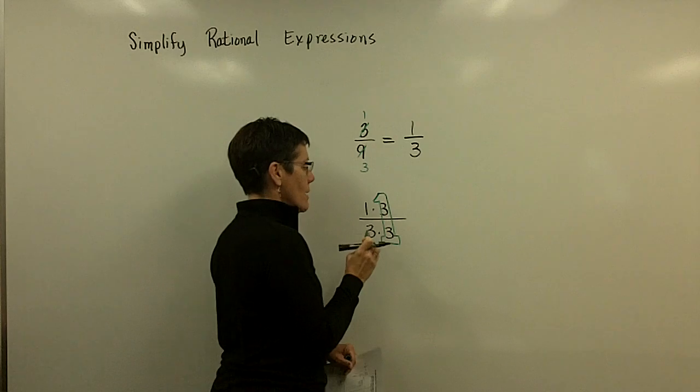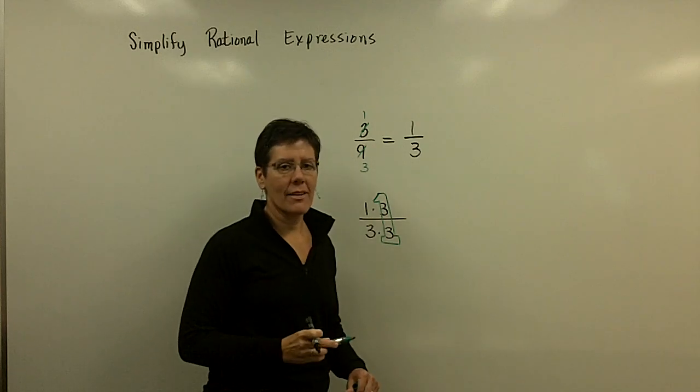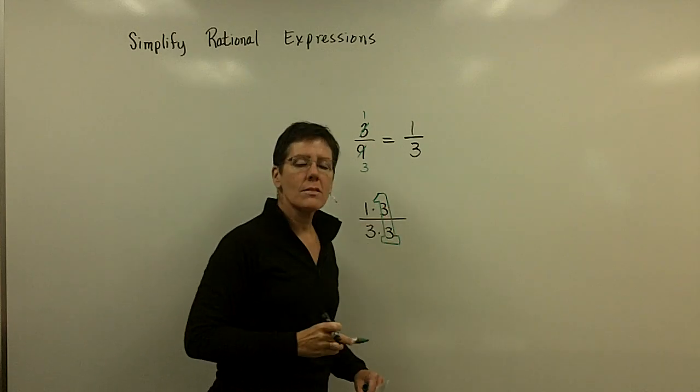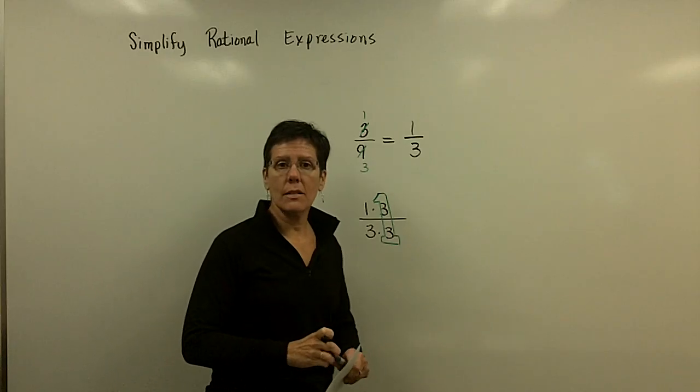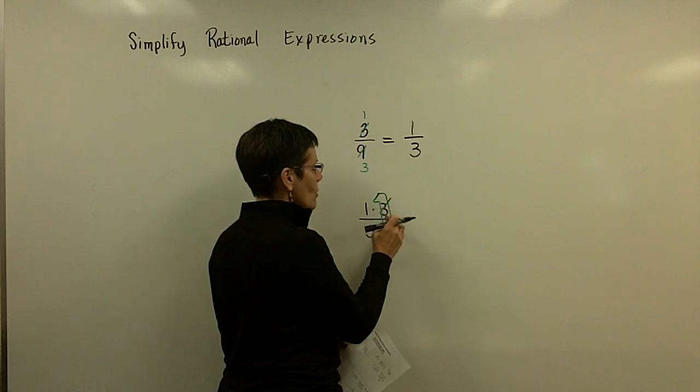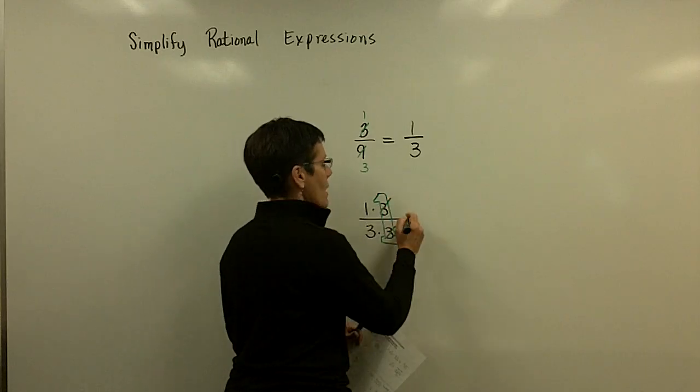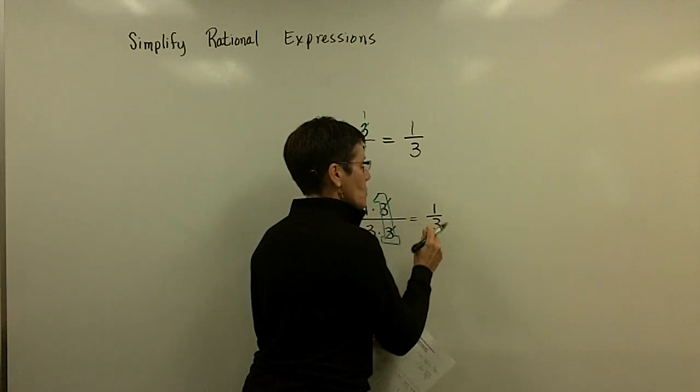I kind of like to try to illustrate that with a block letter 1. 3 over 3 is the number 1. And 1 times any fraction is still itself, or 1 times any number is still itself. So when I take out those 3's, I'm left with the fraction 1 third.